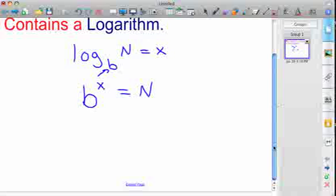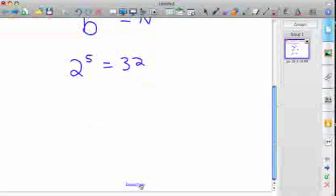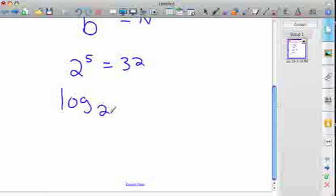So b to the x equals N is how you convert a logarithm to an exponent. You could reverse that. Let's say you had 2 to the 5th equals 32. We know that to be true. So that would be log base 2 of 32 equals 5. So the logarithm actually produces the exponent.